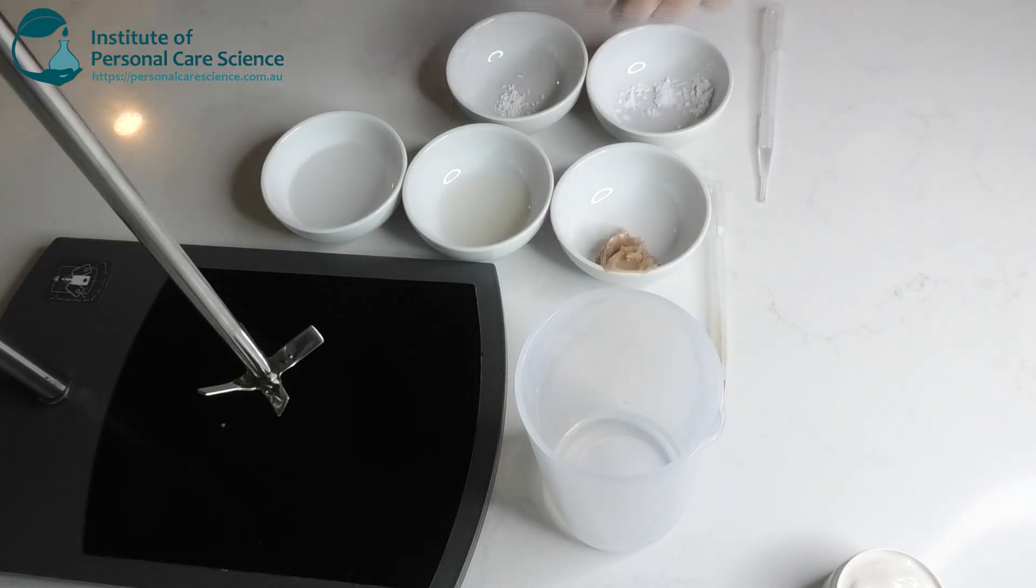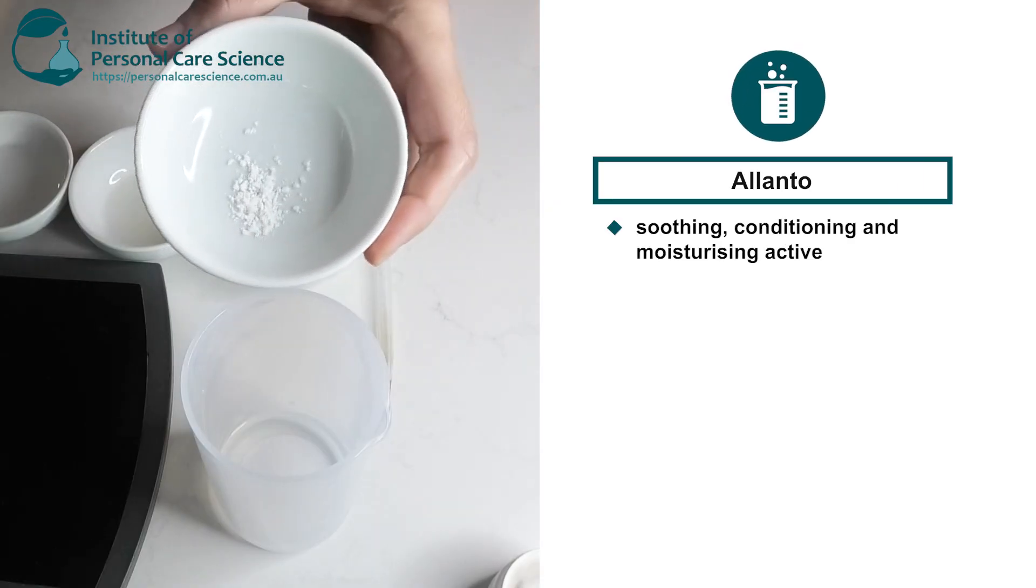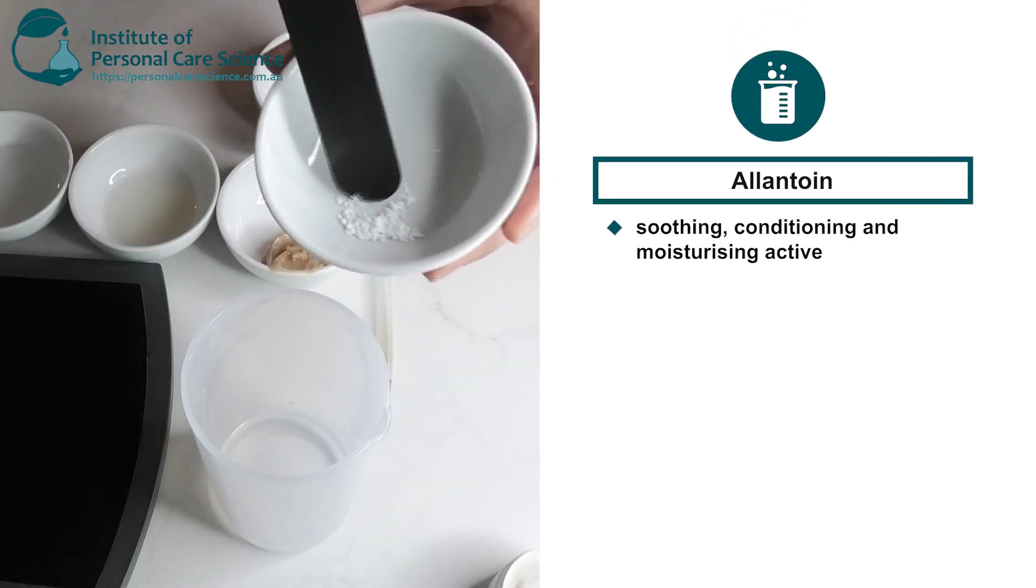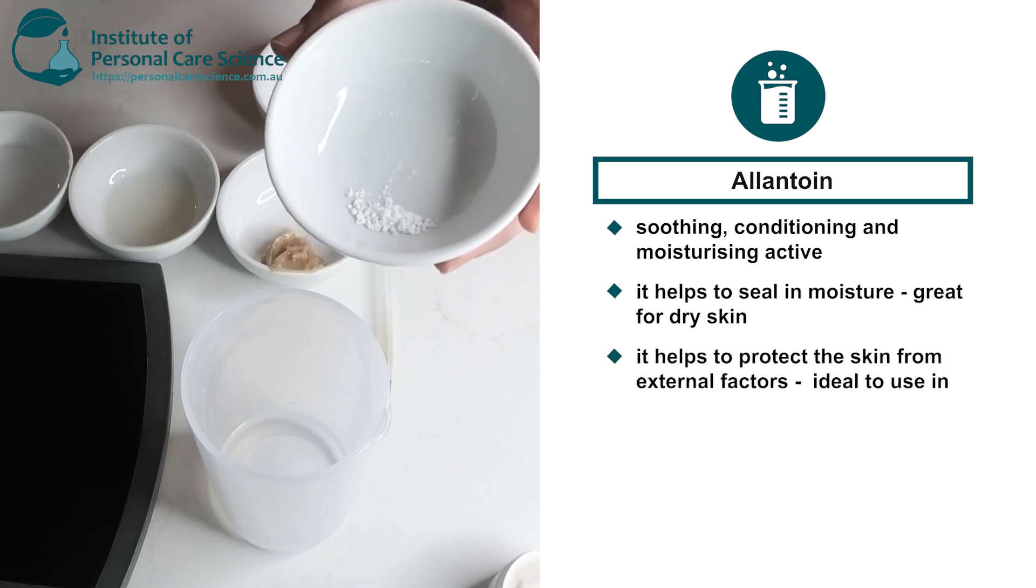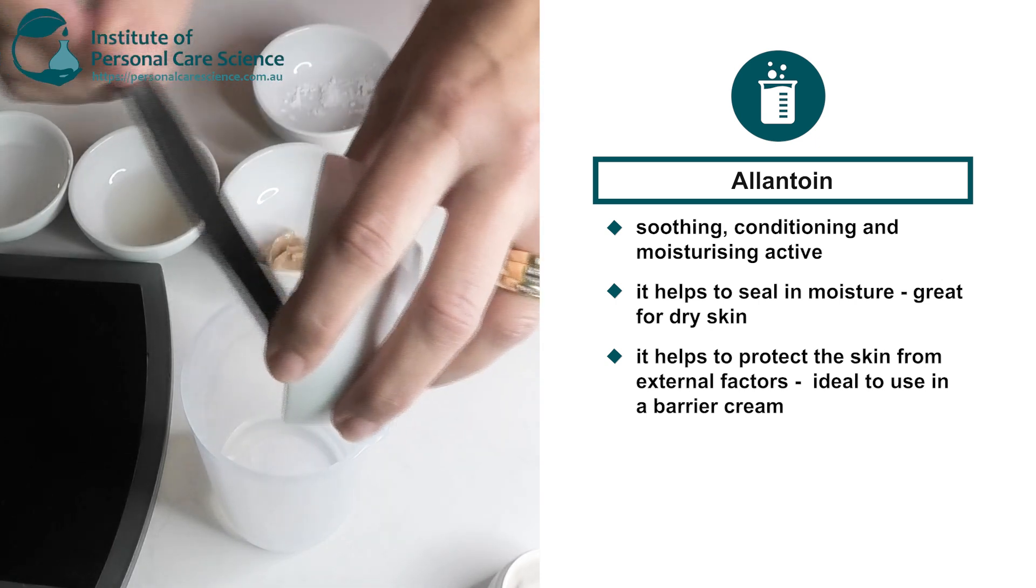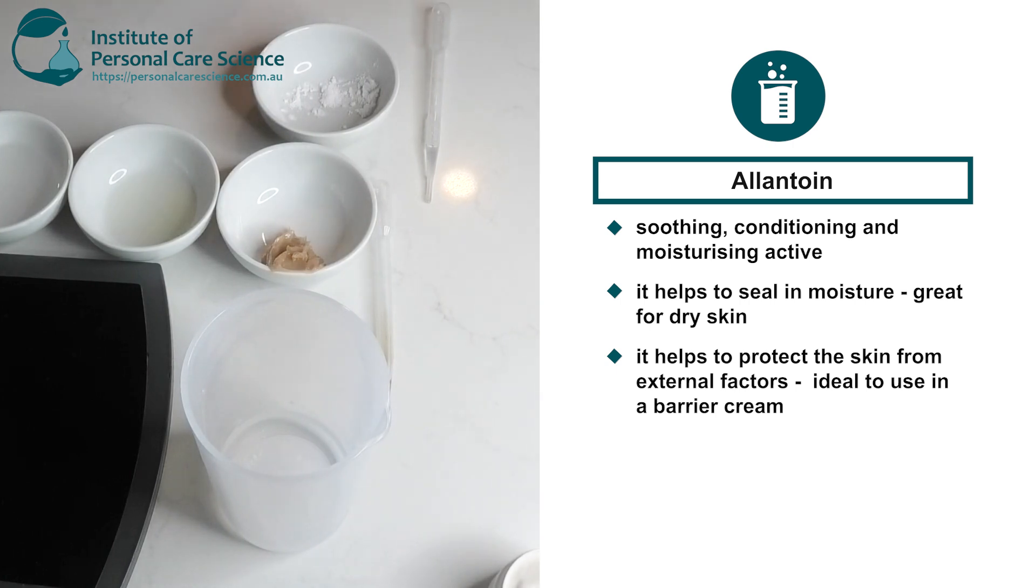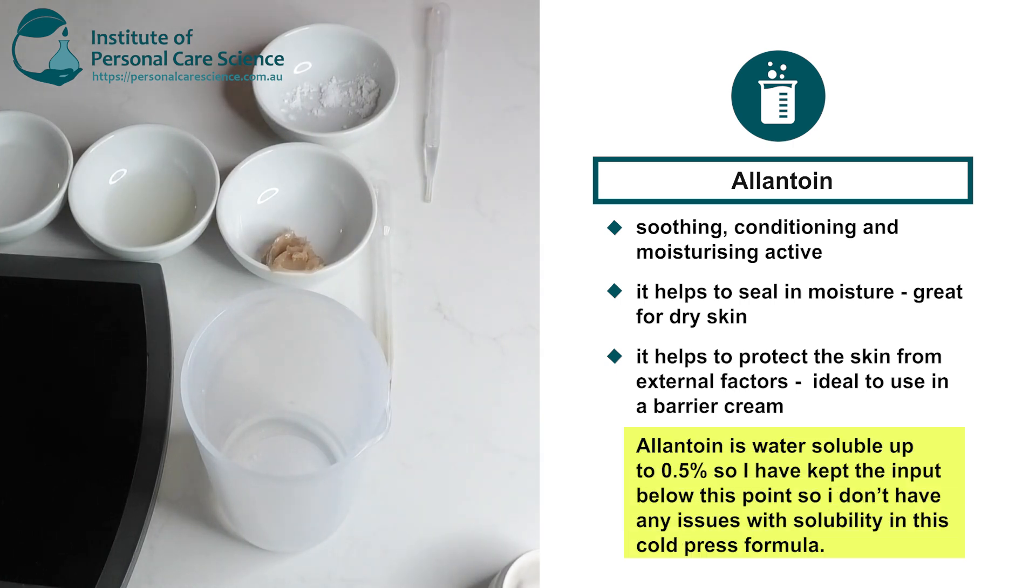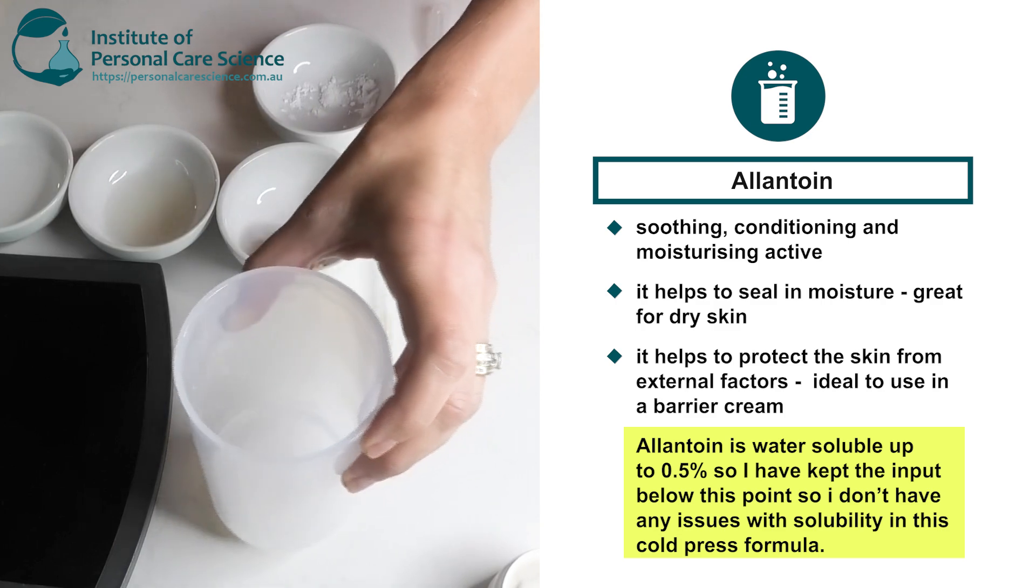And to that we're going to add some actives. Now I've chosen Allantoin, which is a soothing and conditioning active. It's great for dry skin because it helps to seal in the moisture. It also helps to protect the skin from external factors, so it's ideal to use in a barrier cream. Pop that into the water phase. And it's suitable for all skin types. Allantoin is water soluble up to 0.5%, so I've kept it below this input in the formula so I don't have any issues in solubility in a cold process formula like this one.